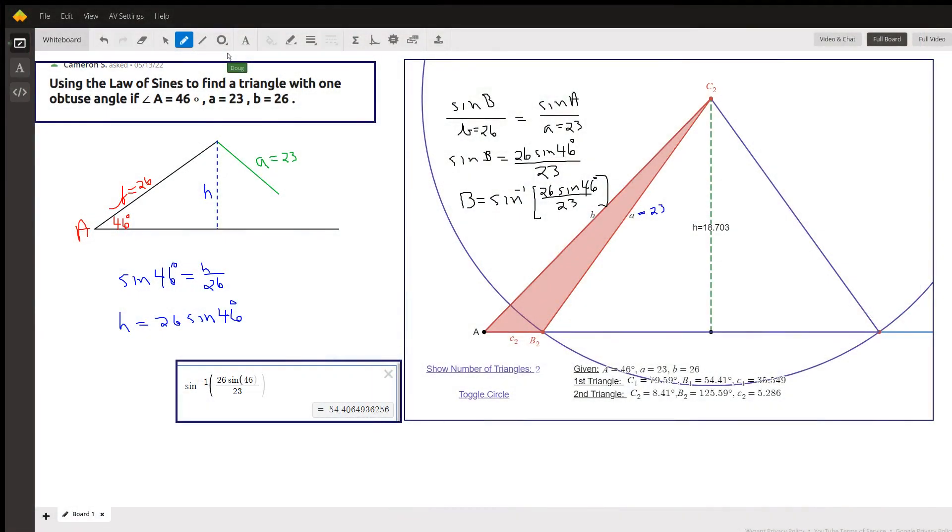This is what we call the law of sines ambiguous case. So to picture what's going on, let's focus on this little diagram right here. When I run into this law of sines ambiguous case, I draw a horizontal ray out this way, applying that it could go as far as we want.